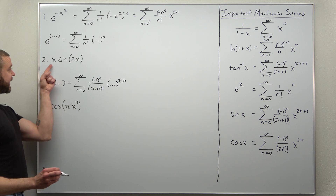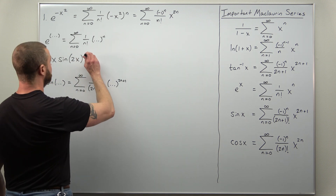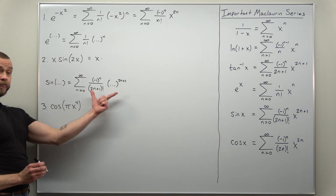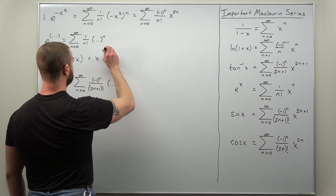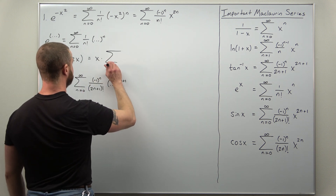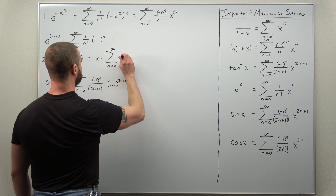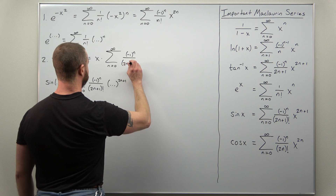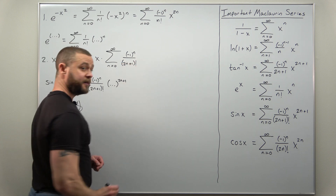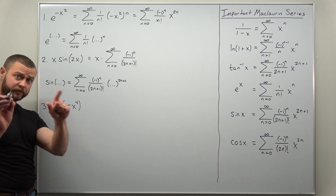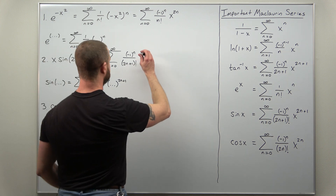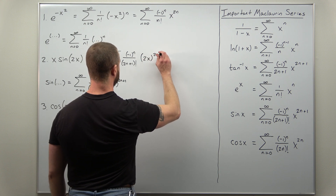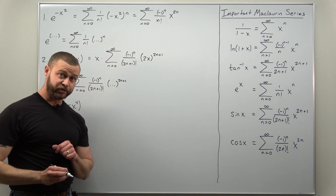We'll keep the x out front factored out and replace sine of 2x with its Maclaurin series: the sum from n equals zero to infinity of negative one to the n divided by 2n plus one factorial, and inside we replace with 2x, so we get 2x all raised to the 2n plus one power.